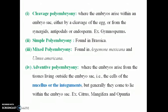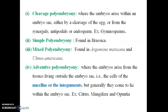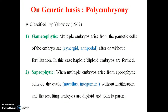Mixed polyembryony is where embryos arise from tissue outside the embryo, such as the nucellus. Generally, they come to lie within the embryo sac. Examples include Citrus, Mangifera, and Pancratium. Genetic bases involve whether embryo formation occurs with or without fertilization — gametophytic (non-diploid) embryos arise from separation in sporophytic cells.